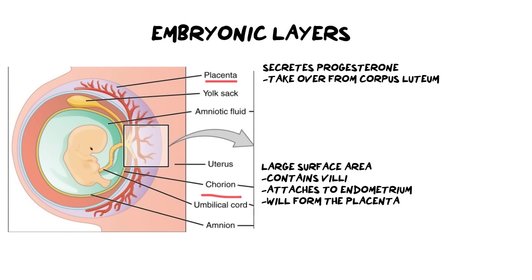The chorion also has villi — those long finger-like extensions that grow out of cells. In this instance these villi are a bit bigger, and they grow out of the chorion into the wall of the endometrium, allowing the chorion to attach to the endometrium and eventually form the placenta. You can see that through the network of blood vessels growing through this, which would only have been possible with villi.